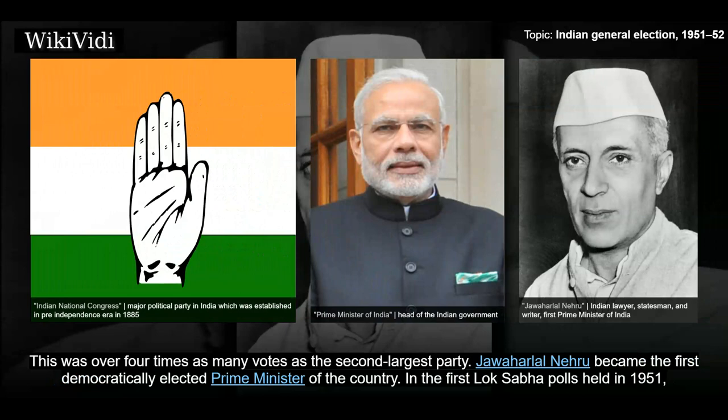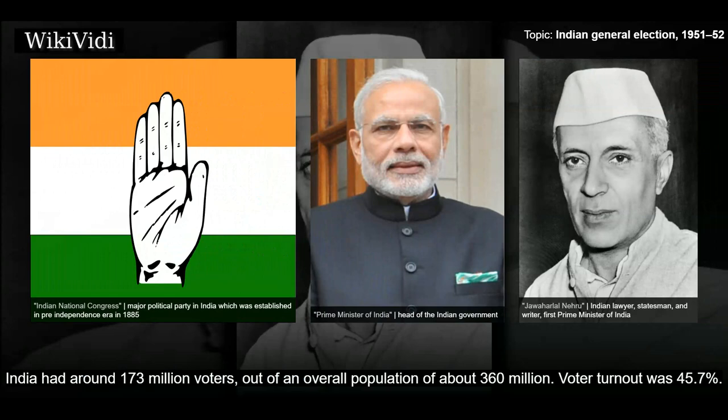In the first Lok Sabha polls held in 1951, India had around 173 million voters out of an overall population of about 360 million. Voter turnout was 45.7%.